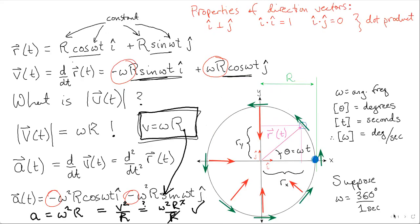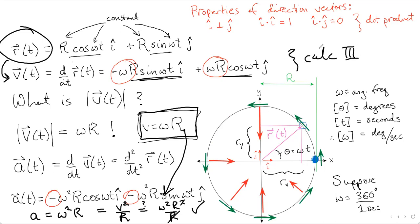I'd encourage you to go back and work through this yourself. Try to identify the r vector, plot it, and take the time derivatives. Some of you may not have had Calculus 3 yet, so the differentiation steps are probably Calc 3 territory — that's totally okay. This isn't required for Physics 1, but it's a great way to see where formulas like v = ωr and a = v²/r actually come from. I hope that's helpful — if you have questions, let me know by email or Colab. Bye.